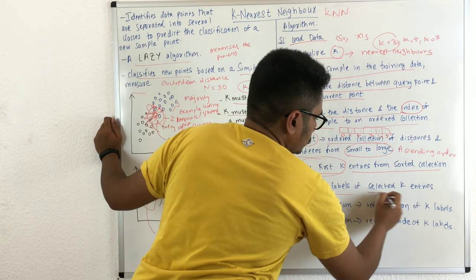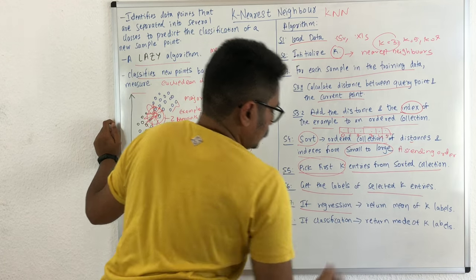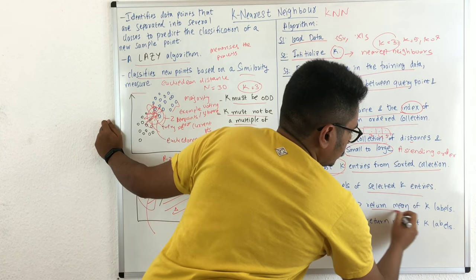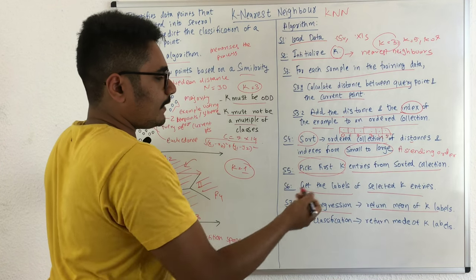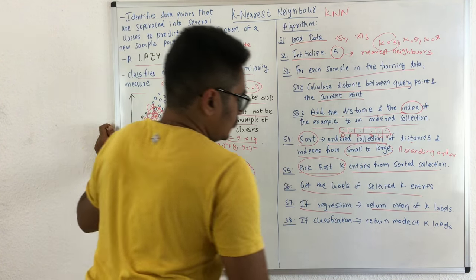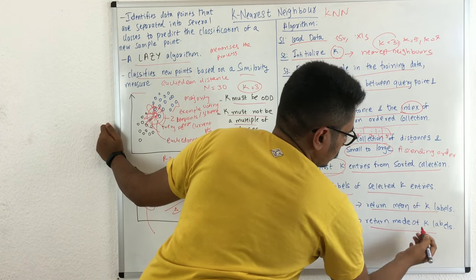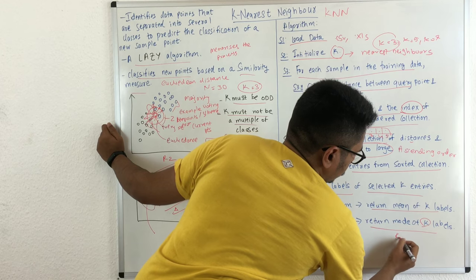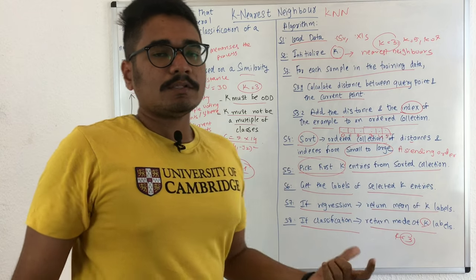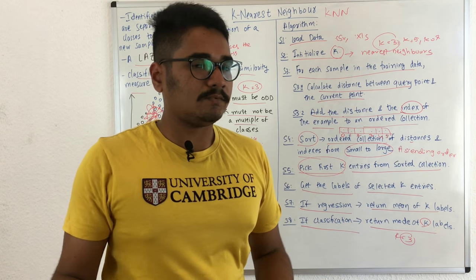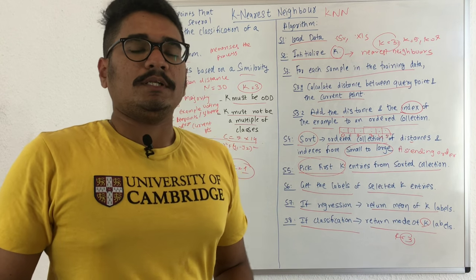Now get the labels of the selected k entries. If it's a regression problem, return the mean of the k labels — the sum of labels divided by k. If it's a classification problem, return the mode of the k labels — if k = 3, the most frequent label among those 3 is the mode. So this KNN algorithm can be used for both regression and classification problems in supervised learning.